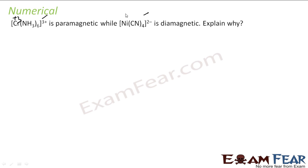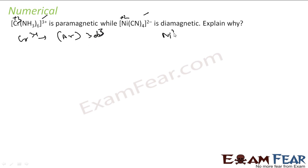In Cr(NH₃)₆³⁺, the oxidation state of Cr is +3, and in Ni(CN)₄²⁻, the oxidation state of Ni is +2. Chromium is [Ar] 3d⁵ 4s¹, so Cr³⁺ is 3d³. Nickel is 3d⁸ 4s², so Ni²⁺ is 3d⁸.